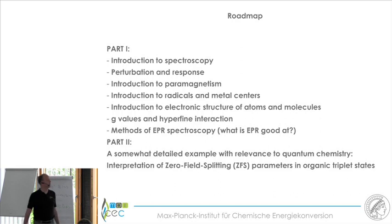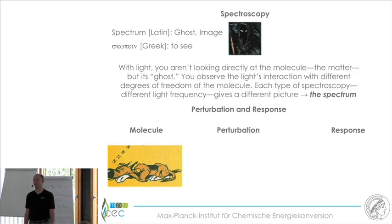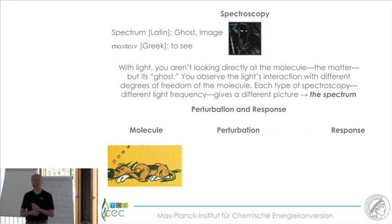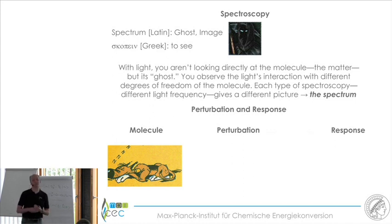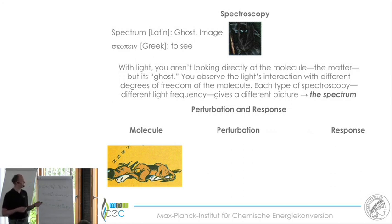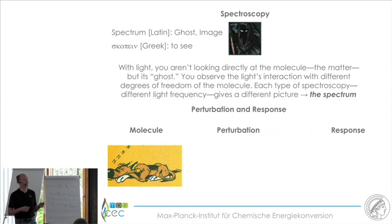As a reminder: spectroscopy comes from the Latin word 'spectrum,' which means ghost or image, combined with the Greek word 'skopein,' which means to see. So with spectroscopy we do not look directly at the molecules — we look at the ghost or image of the molecule. What we basically do in spectroscopy is make perturbations: we irradiate our molecules with light of various wavelengths and detect the response of the molecule.